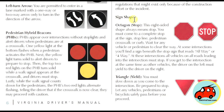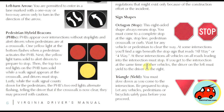The octagon is the eight-sided shape that means stop — you must come to a complete stop at the sign or a stop line, a pedestrian crosswalk, or the curb. Wait for any vehicle or pedestrian to clear the way. At some intersections, a sign beneath the stop sign reads all-way or four-way — all vehicles on roads leading into the intersection must stop. If vehicles arrive at the same time, the driver on the left must yield to the driver on the right.